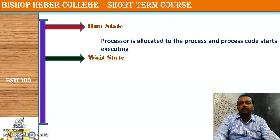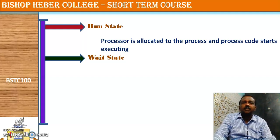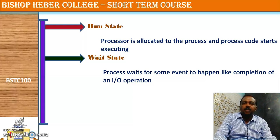Since the processor is a high-speed part of the computer, we should not waste processor time during idle periods. So if a process starts waiting for some event — like completion of an I/O operation — it is immediately moved to the wait state. Another process from the ready list is then selected and moved to the run state.